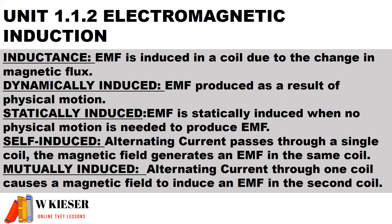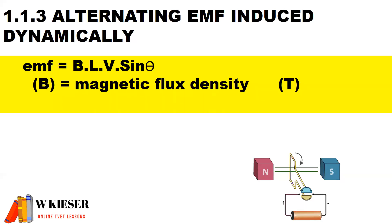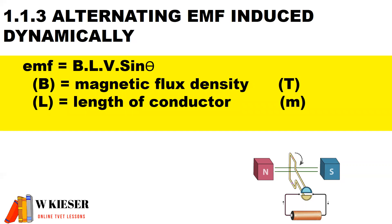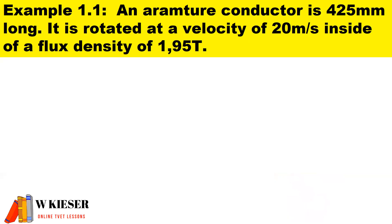To produce an EMF or sine wave, we take a coil and rotate it through the lines of flux running from north to south. To calculate the EMF, the formula is: magnetic flux density in Tesla, multiplied by the length of the conductor in meters, multiplied by the velocity at which the conductor cuts the flux in meters per second, multiplied by sine theta.